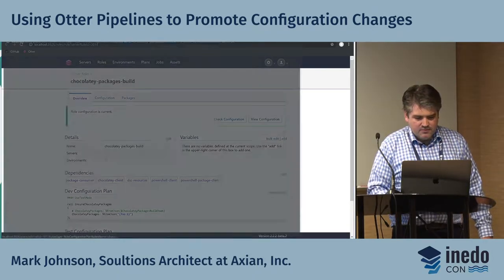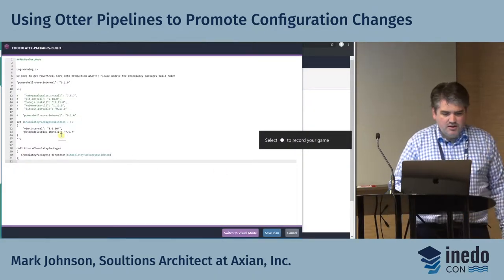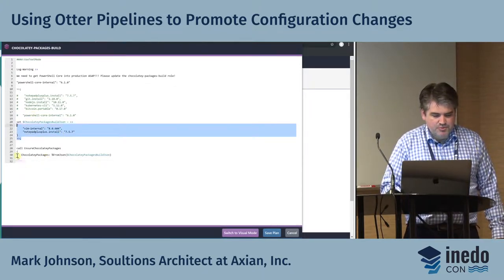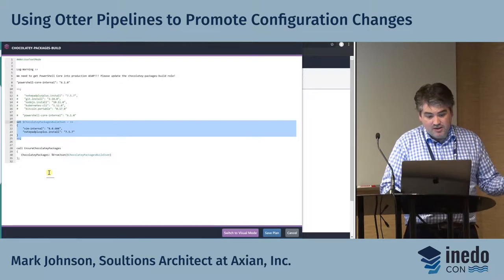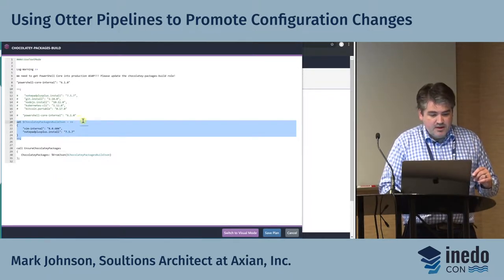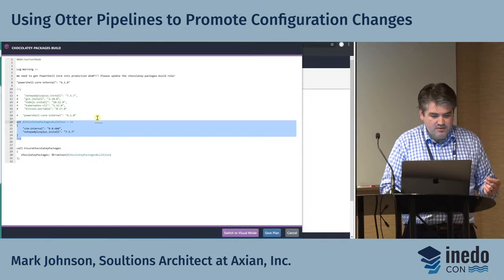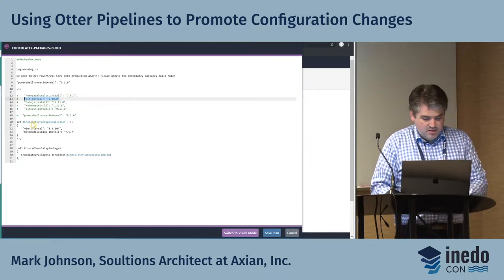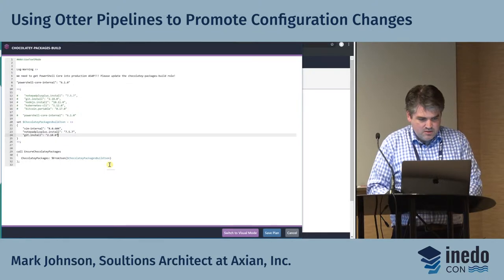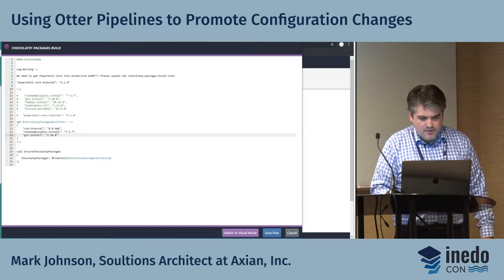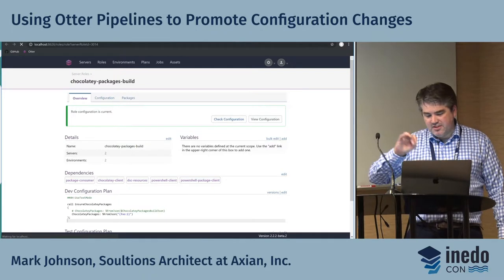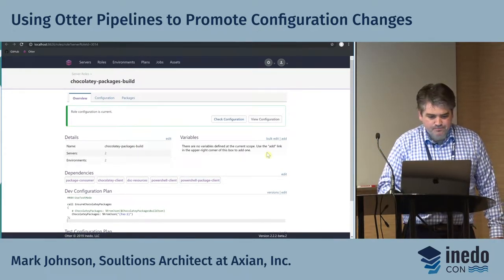Let's look at the role — currently using the Chocolatey packages build role. Let's edit that version. You can see a list of Chocolatey packages that are already installed. Let's go ahead and throw in another one — let's do git install — I think that one's okay and won't take too long. We'll save that.